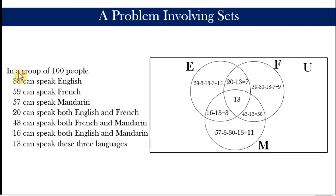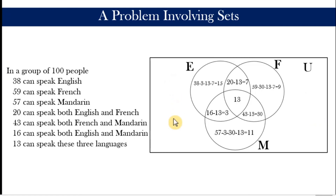Finally, the universal set includes 100 people. If we add all the numbers inside the subsets — 15, 7, 9, 13, 3, 30, and 11 — they do not sum to 100, because some people do not speak any of the three languages. The number of people outside the subsets but inside the universal set is 100 minus all those values, which gives us 12.